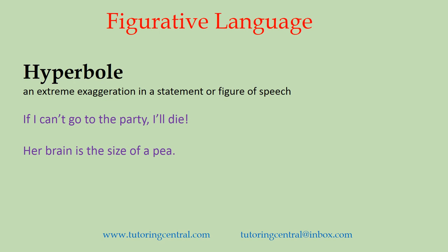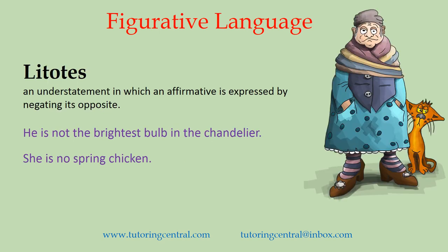Next we have litotes — which can be pronounced either way — and these are understatements in which an affirmative is expressed by negating its opposite. For example: 'He is not the brightest bulb in the chandelier' — suggesting this isn't the smartest person. Or: 'She is no spring chicken' — meaning she's not very young, she's getting up there in years. It's an understatement expressed by negating the opposite.